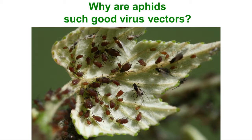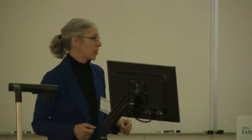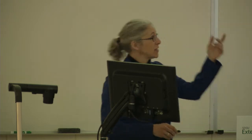Why are aphids such good virus vectors? These are actually aphids on grape. First of all, you've all dealt with soybean aphid long enough to know that they're parthenogenic — that's a fancy way of saying that during the summer, they reproduce without mating. All the aphids in the summer that you see are female. If this was summer and you were an aphid colony, most of you would not be here. It's pretty much a girls club. This non-winged aphid here is a baby-making machine. Her body is set up to just produce kids. That's her only purpose.